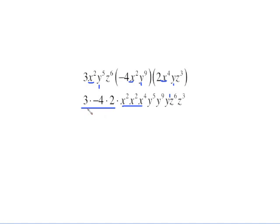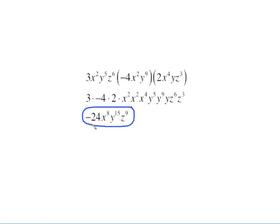Now I just need to put all of this together. 3 times negative 4 times 2 is going to give me negative 24 and then group those up. And you see the answer here. All of these x's keep that base of x. Add 2 plus 2 plus 4 is what gives me 8. My y's, that is a y to the first. Add up the 5 plus 9 plus 1 gives me 15. And the z's is z to the ninth.